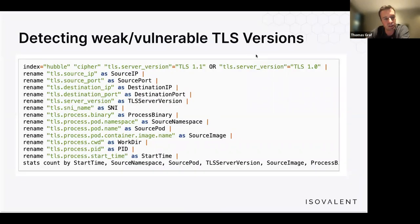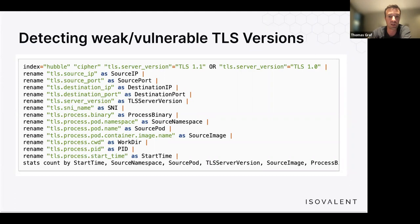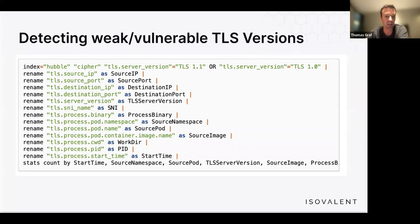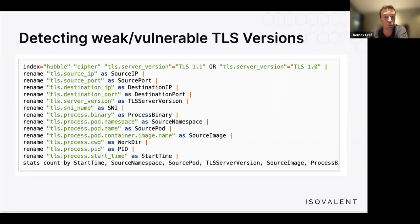All this observability can feed into a SIEM such as Elasticsearch or Splunk. An example query detects weak or vulnerable TLS versions — querying all events with TLS version 1.0 or 1.1 — and surfaces rich context including process name, namespace, pod name, SNI, port, IPs, start time, and PID.